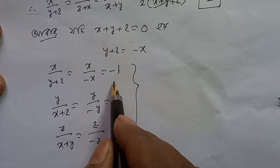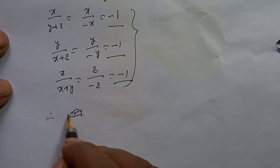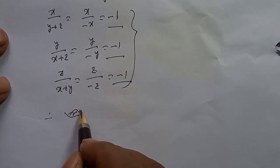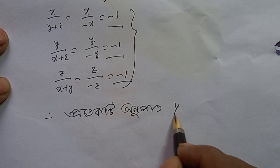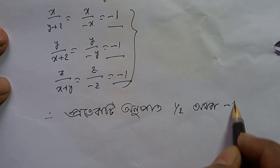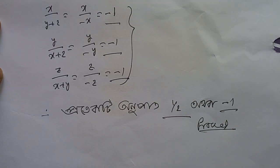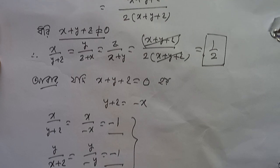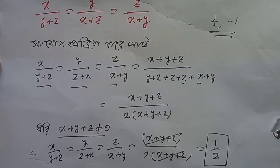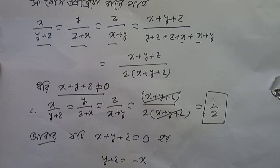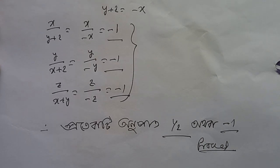And z by x plus y: since x plus y plus z equals 0, x plus y equals minus z, so z by minus z equals minus 1. Therefore each ratio is minus 1. Hence each ratio is either half or minus 1.